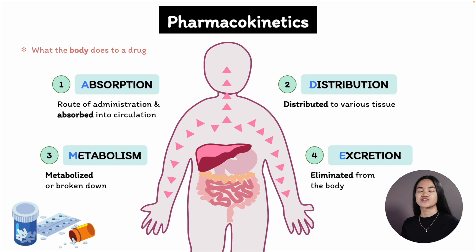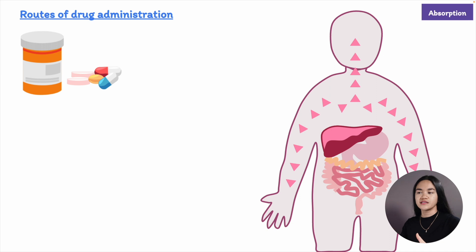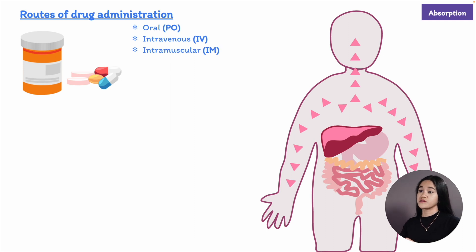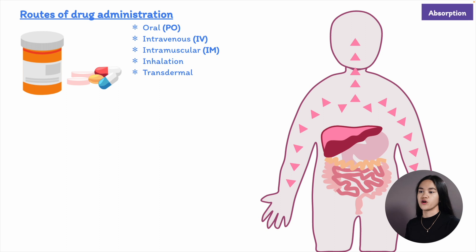Let's go through absorption. When a drug is absorbed it must enter the body by some route — whether that be orally, intravenously when it's injected directly into the bloodstream, intramuscularly when it's injected into a muscle, inhalation which is rapidly absorbed, or transdermally, such as a patch containing the drug.